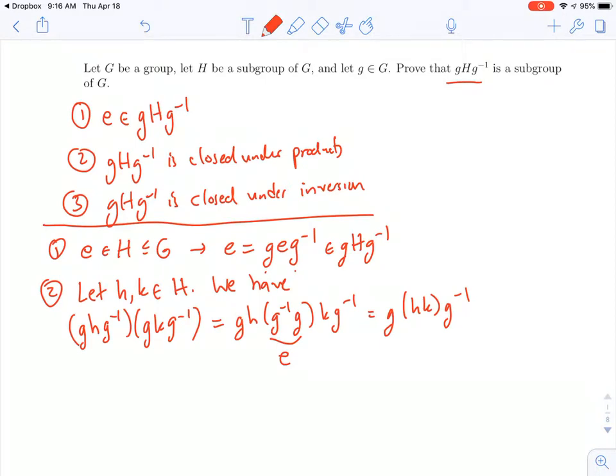Now h and k came from big H, and H is a subgroup, so it's closed under products. So this is also an element of H, and so our element is an element of g big H g inverse, and so we know that the conjugate is closed under products.